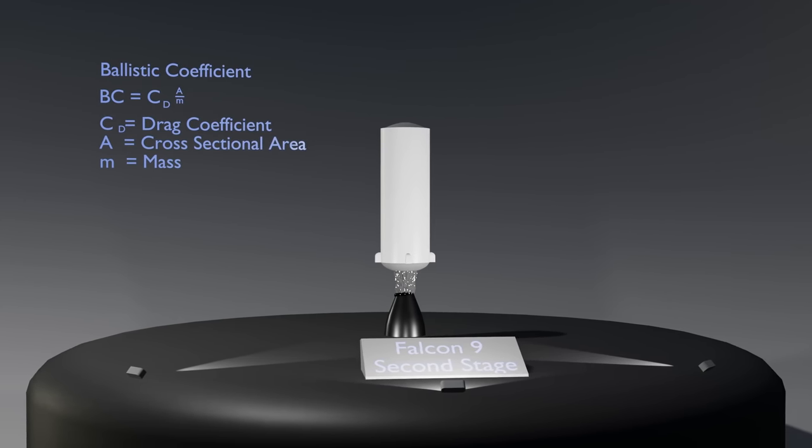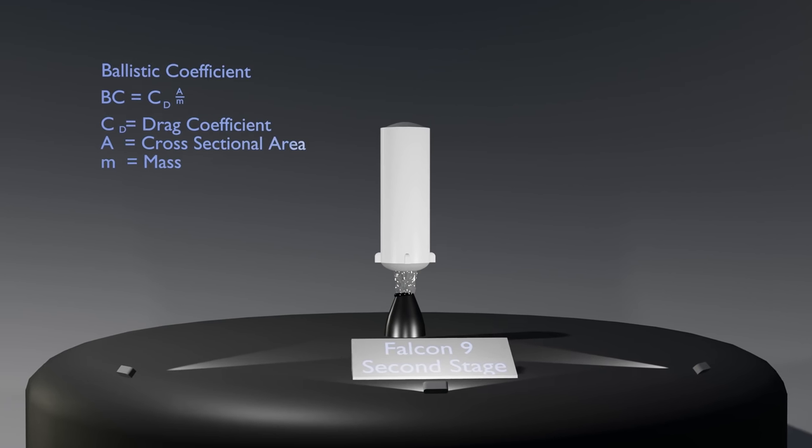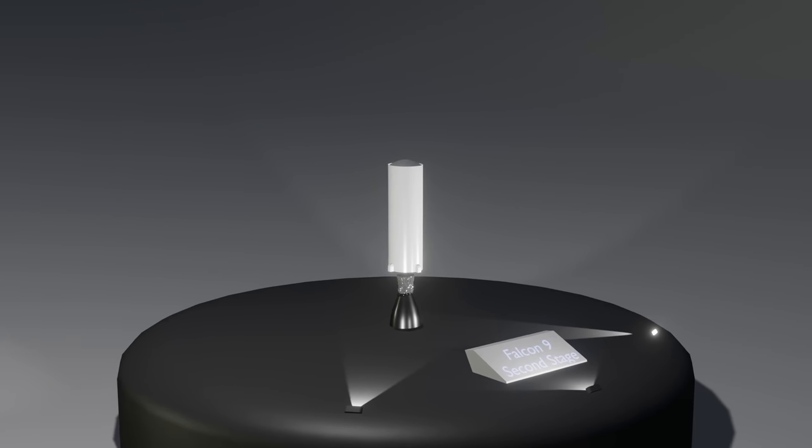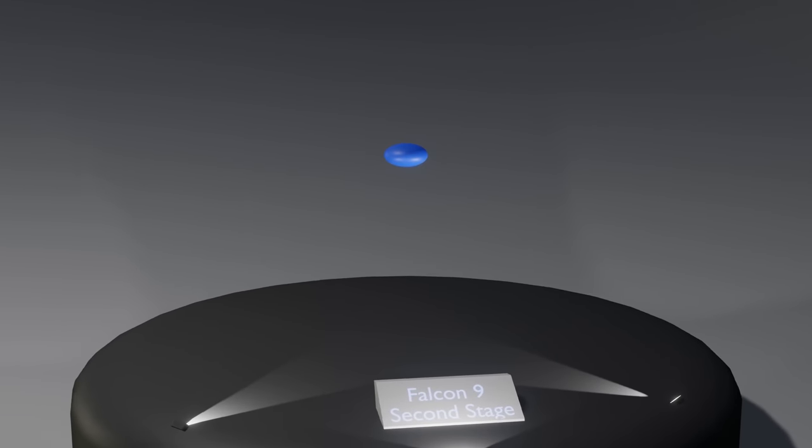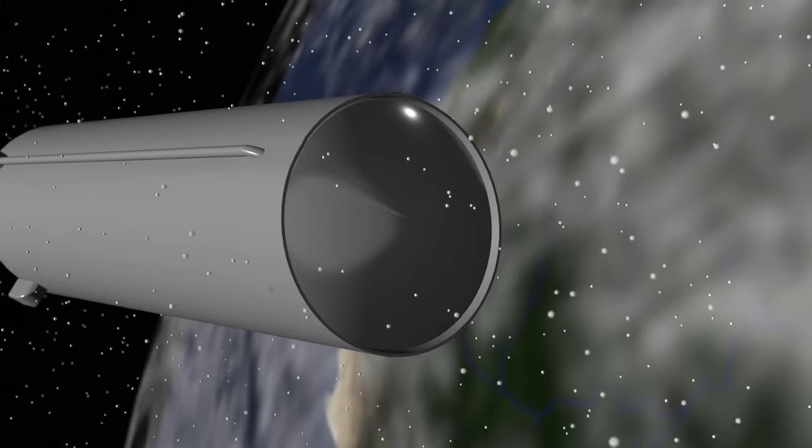First, the drag coefficient is a value dependent on the geometry of the face that is colliding with the air particles. In this case of the Falcon 9 second stage, it would be slightly spherical if it remained in this orientation.